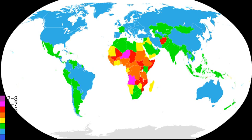Ibn Khaldun, a North African Arab polymath, considered population changes to be connected to economic development, linking high birth rates and low death rates to times of economic upswing, and low birth rates and high death rates to economic downswing. Khaldun concluded that high population density rather than high absolute population numbers were desirable to achieve more efficient division of labor and cheap administration.